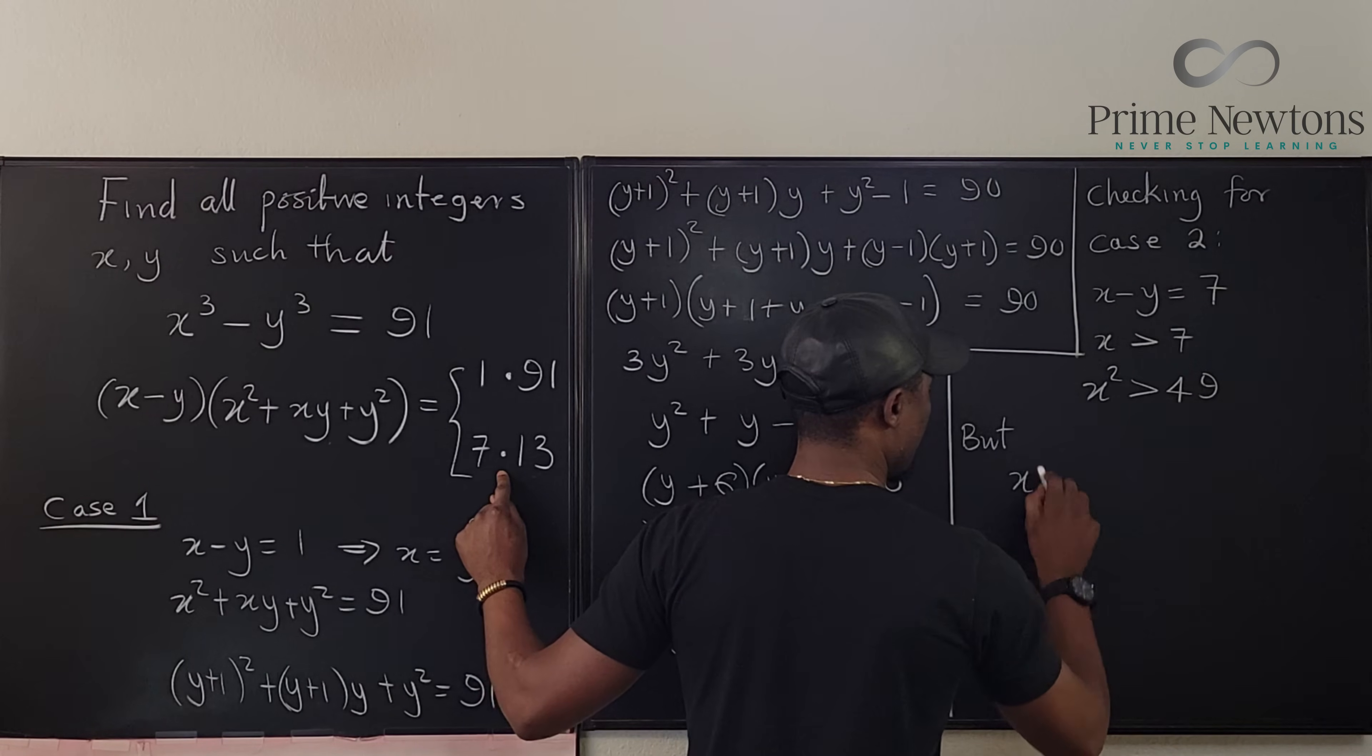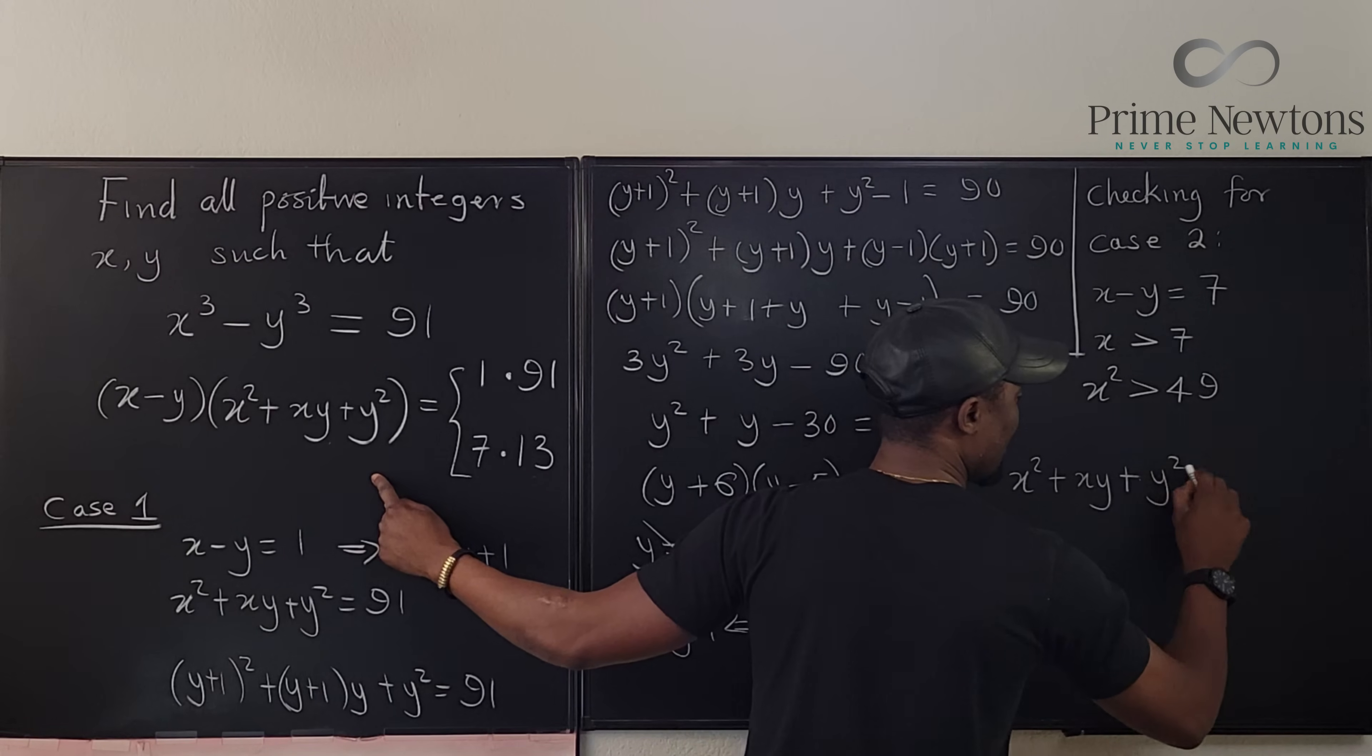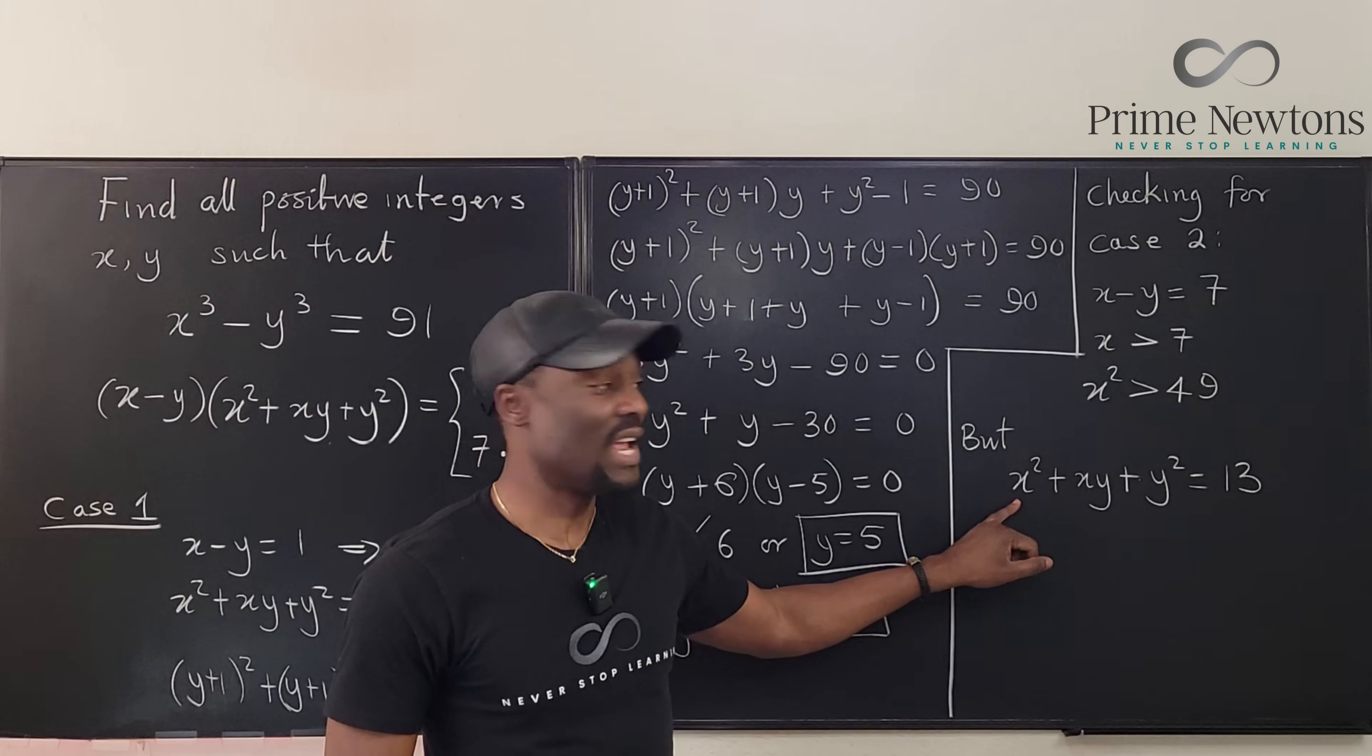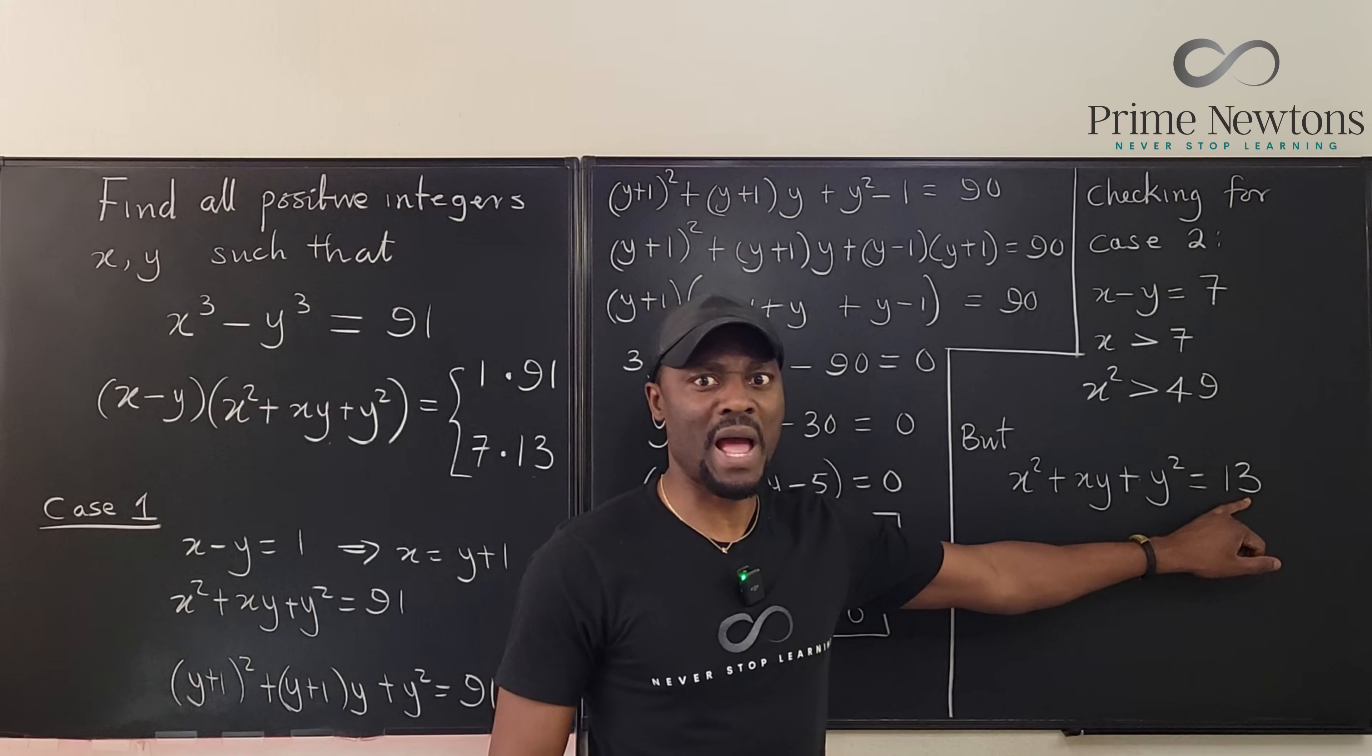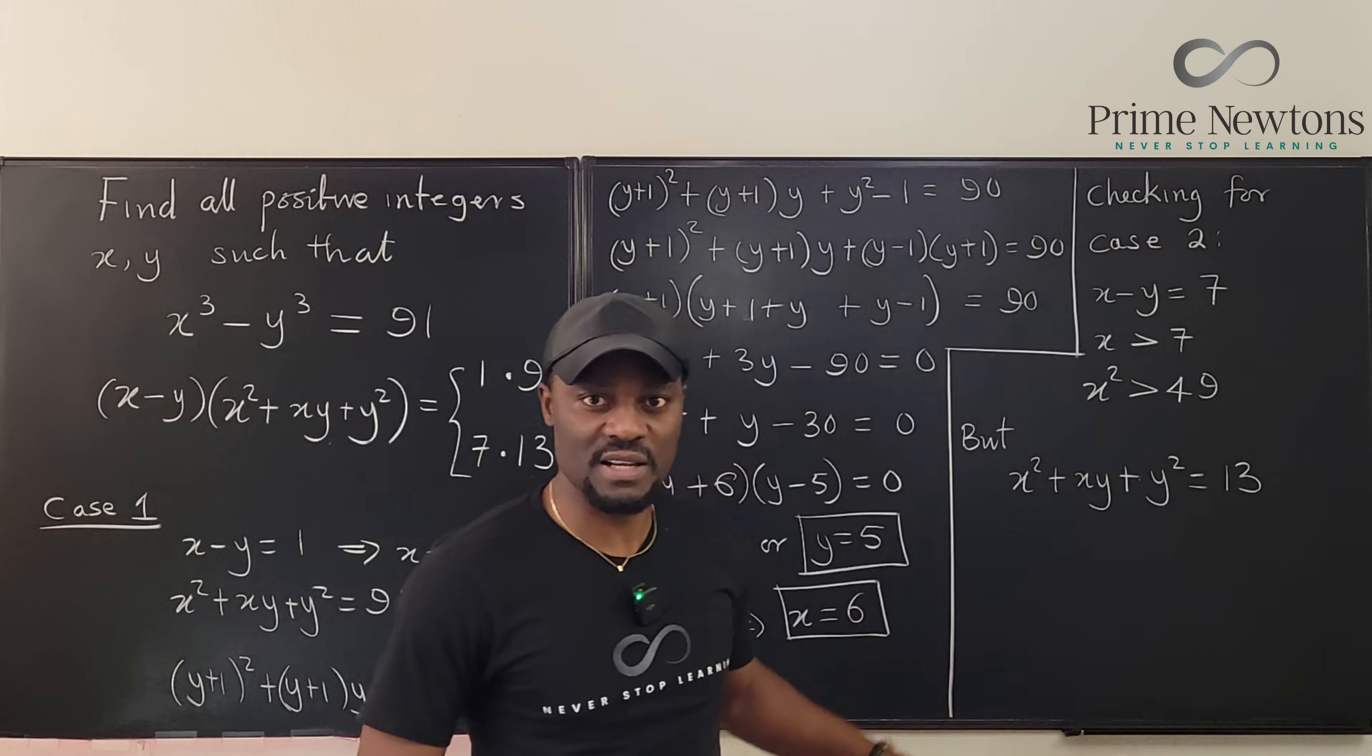But how can x squared be greater than 49 if the second equation is equal to 13? But x squared plus xy plus y squared equals 13. Do you think this is possible? If this is already 49, this is also positive, this is also positive, and then all of them adding up to a number that's much smaller than even x squared. It is not possible. This is not a valid equation.